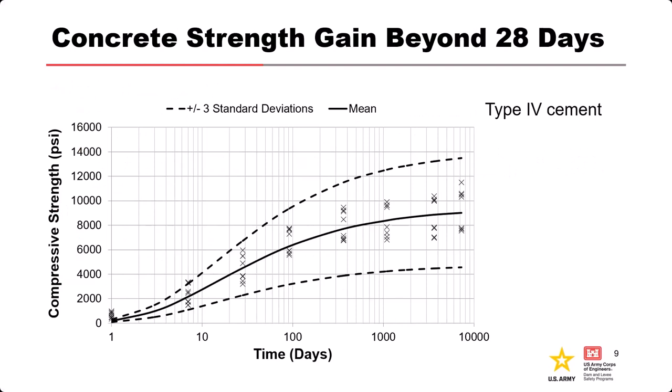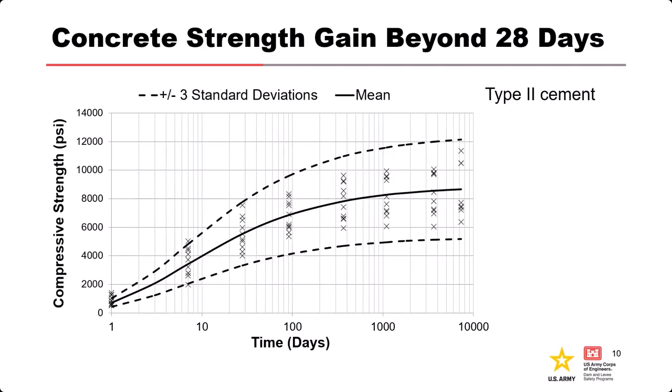We'll also ask you in the exercise to estimate what the current strength of the concrete is, given the 28-day strength. To do that, you can use curves that track concrete through long periods of time to see how it gains strength. It's dependent on the cement type — this is type four cement, which is a low heat of hydration cement typical for mass concrete. Type two cement is another one typical for mass concrete. You can use these curves to age the strength, and the exercise will give you the actual equation for the curves since you have to read off the log scale.